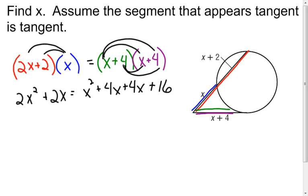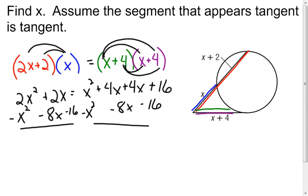One way to solve a quadratic equation is to get one side equal to 0. I'm going to get my right side equal to 0, which means I'm going to have to subtract an x squared, subtract the 8x, and subtract the 16. Do the same thing over here — subtract the x squared, the 8x, and the 16. And now I'm going to be left with x squared minus 6x minus 16 equal to 0.